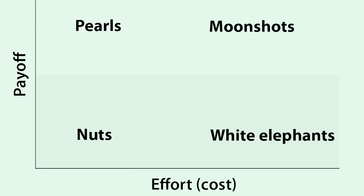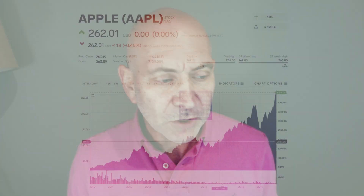High effort and high payoff investments are the moonshots. Billionaires like to take moonshots — they change the world that way. If they don't work out, they bear the cost; if they do, everyone benefits. In portfolio terms, we want to focus on getting pearls: what does it take to achieve high reward with low effort?